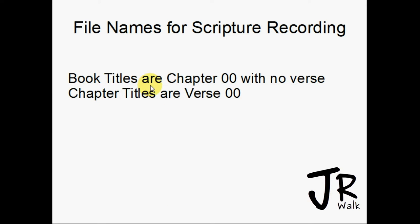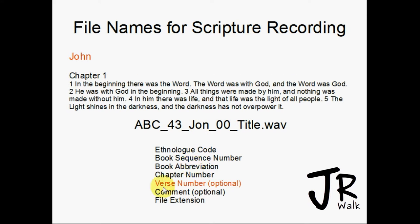All book titles are chapter zero-zero with no verses. Chapter titles like John chapter 1 are verse zero, because we want verse one to be track one. The verse number is optional for a book title. Comments are also optional — I typically only use comments on titles or something unique, but I put 'title' in the filename because it makes the file a little longer and easier to find each book separately.